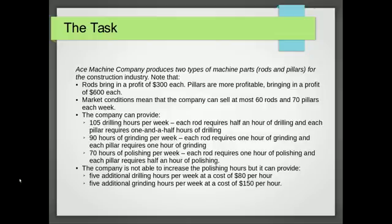So here's the task. We can make a profit of $300 for each rod and $600 for each pillar and we'll use that to make our objective function. We can sell at most 60 rods and 70 pillars. That will give us a maximum constraint.